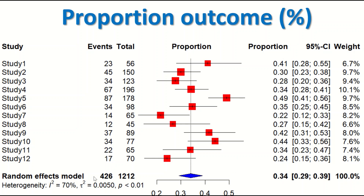The third section of the forest plot from the proportional meta-analysis output is the calculated overall proportion, which is 0.34 with a 95% confidence interval, and a heterogeneity test with an I-squared value of 70% and a p-value of less than 0.05. This forest plot summarizes the output from proportional meta-analysis for all 12 studies pooled together, with the proportion calculated for each individual study and the overall proportion also estimated.